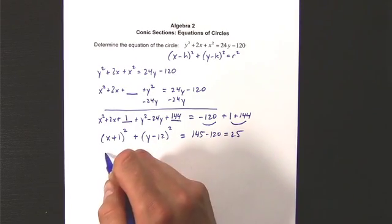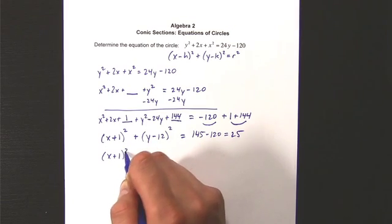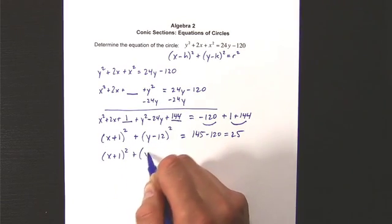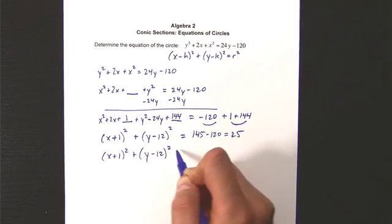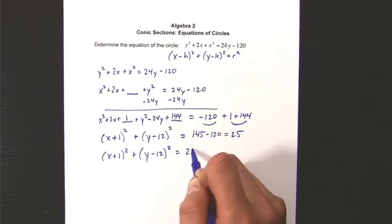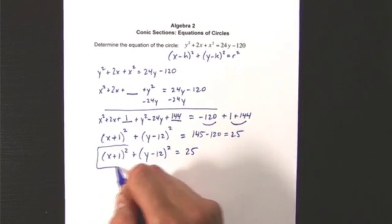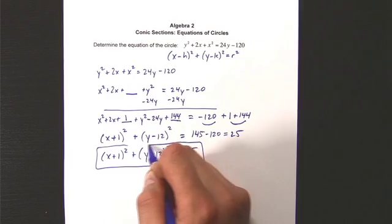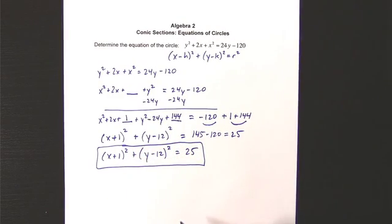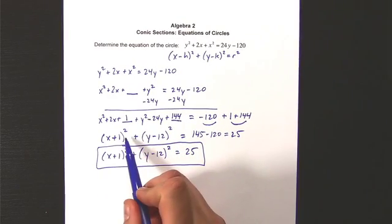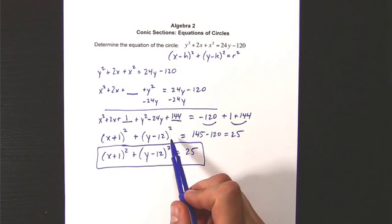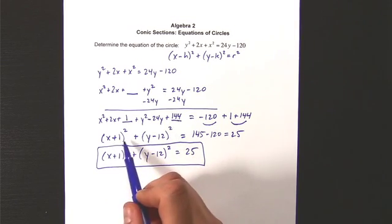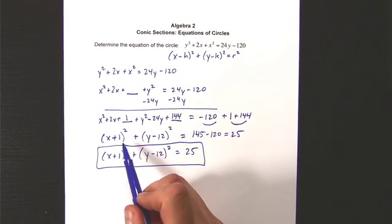So the final equation for my circle is this. So I completed the square for x and for y. And if you don't believe me, you can always foil these guys and check them out for yourself.